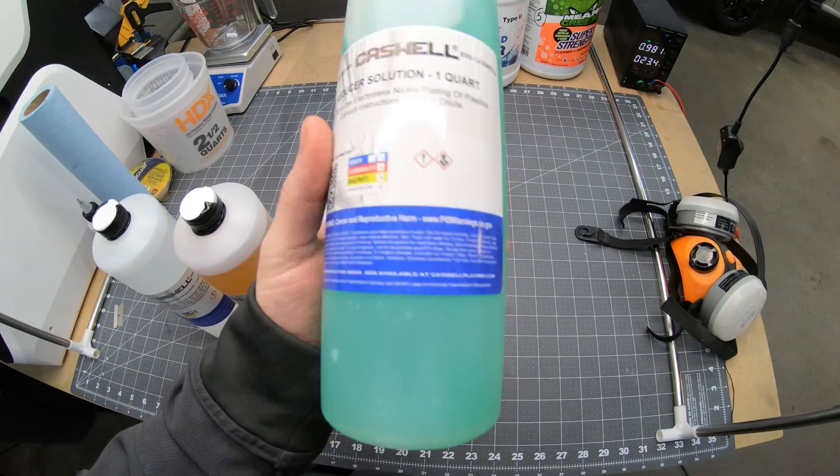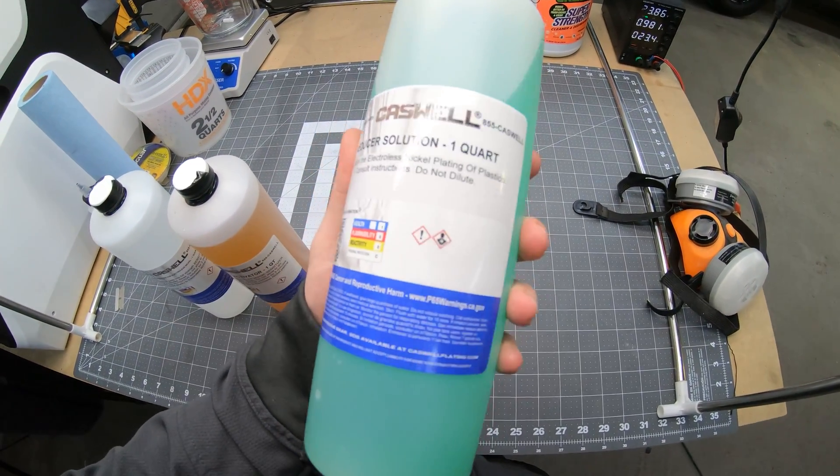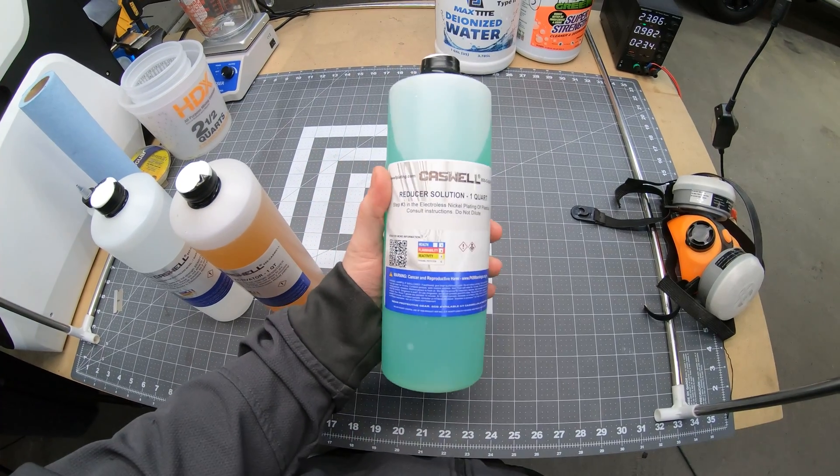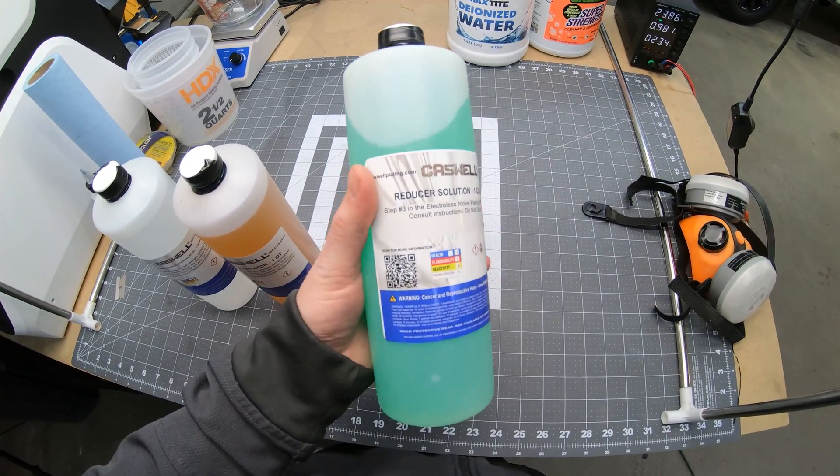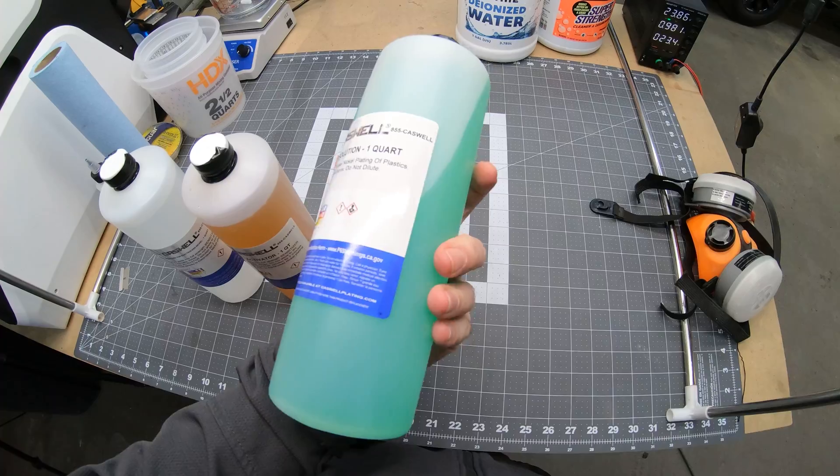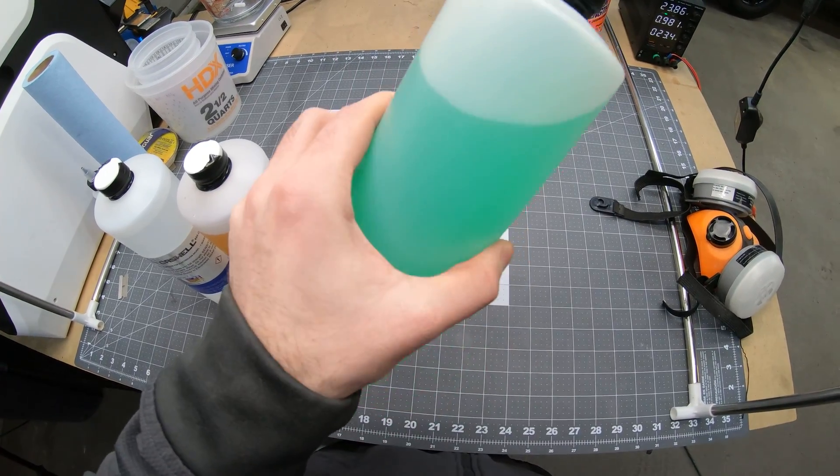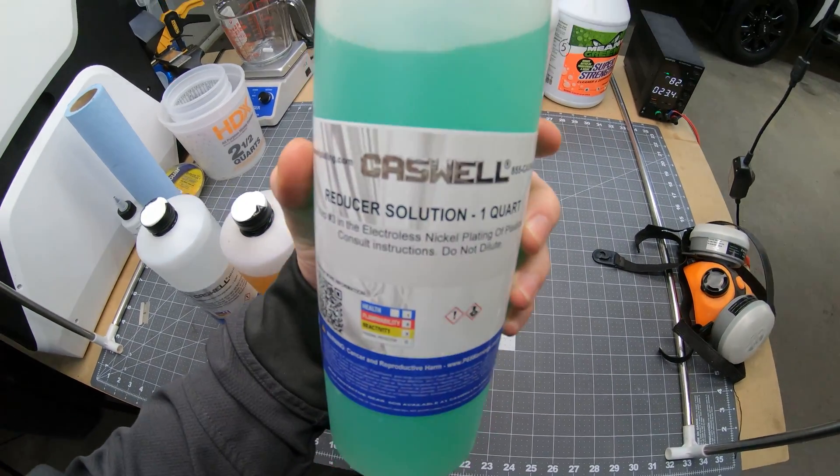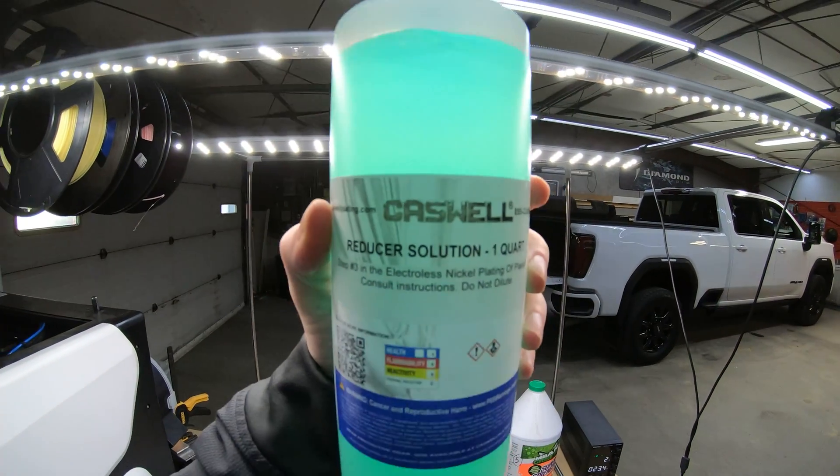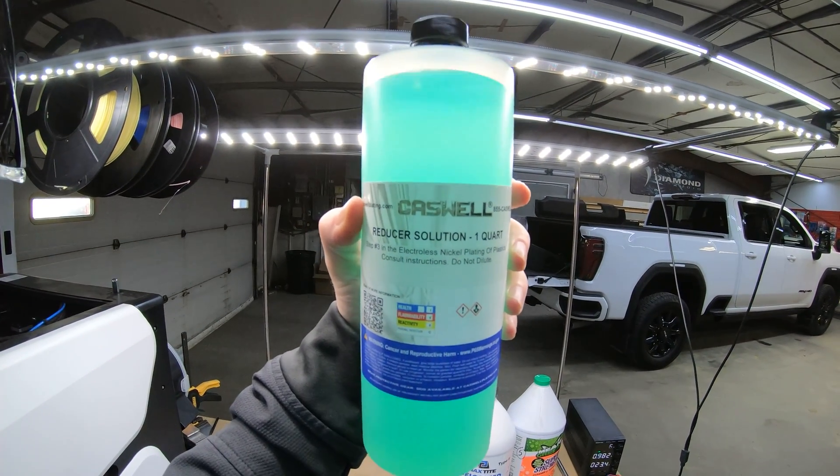Then finally I realized what the real problem was. The company that I had ordered this solution from sent me the wrong solution. They sent me reducer solution instead of nickel plating solution. When I looked it up on their website, they don't even sell reducer solution. So I definitely didn't order the wrong thing. They must have just sent this to me by accident.